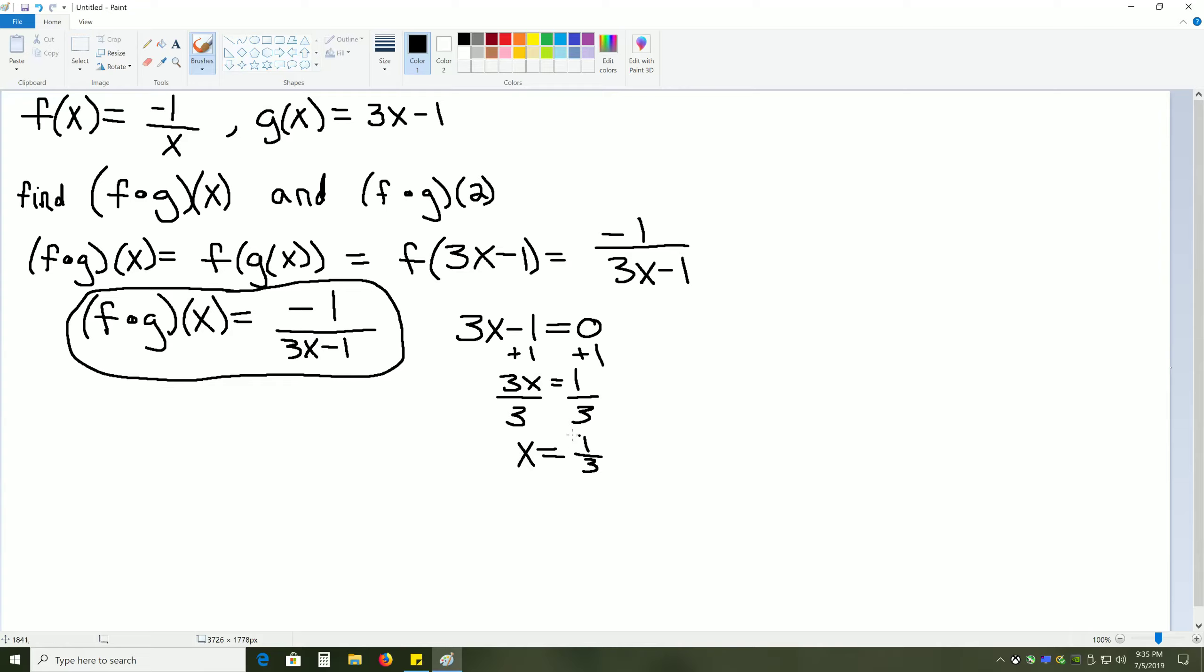So if x equals 1 third, we get division by 0. So our domain is everything but x equals 1 third, meaning it's negative infinity all the way up to 1 third, but not including 1 third, unioned with 1 third all the way to positive infinity. This is everything but x equals 1 third.